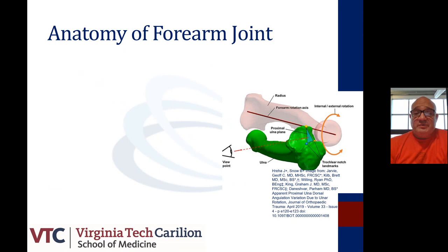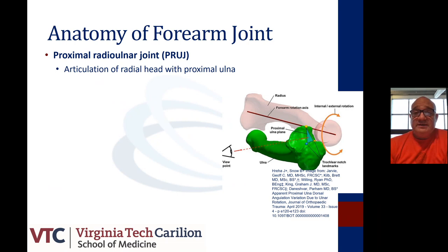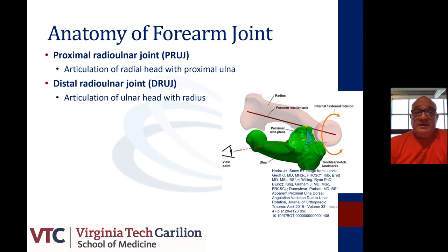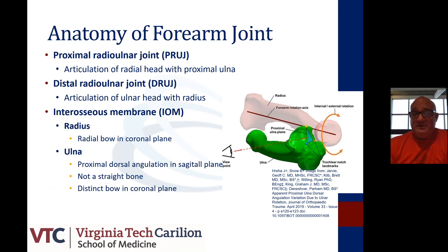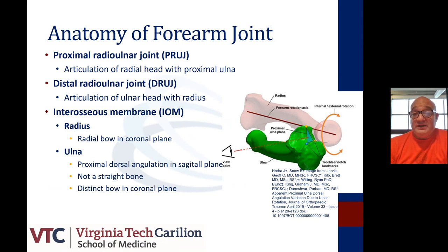Looking first at the proximal radioulnar joint — this is where the articulation of the radial head with the proximal ulna takes place. The distal radioulnar joint is the articulation of the ulna head with the radius and the interosseous membrane. The interosseous membrane has multiple bands. The radius tends to have a radial bow in the coronal plane and proximal dorsal angulation in the sagittal plane. The ulna is not a straight bone and does have a distinct bow in the coronal plane, specifically in the proximal portion.